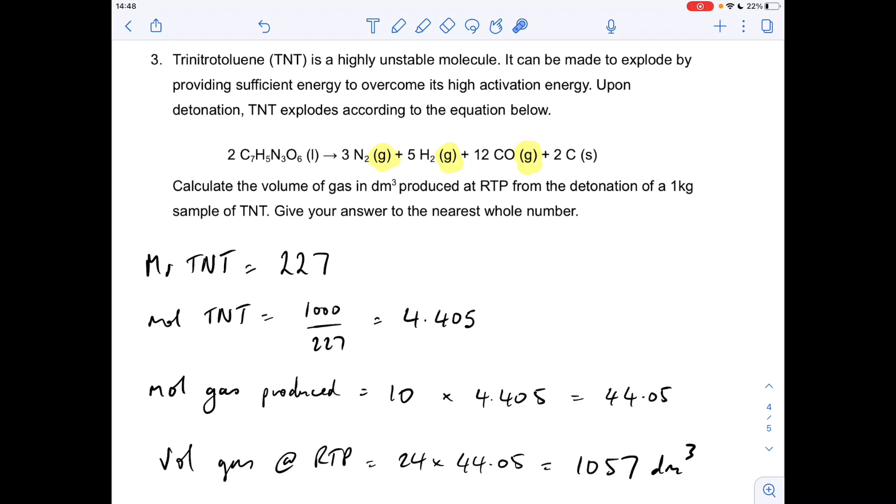So the moles of TNT is a kilogram, so a thousand grams, got to be in grams for mole calculations, thousand grams over 227, so there's that many moles of TNT. So if we look at the ratio, we've got two moles of TNT makes three and five, so eight plus 12, so 20. Two moles of TNT makes 20 moles of gas, so that's a one to 10 ratio. So per mole of TNT, we're going to get 10 times as many moles of gas, so we're going to produce that many moles of gas in this example.